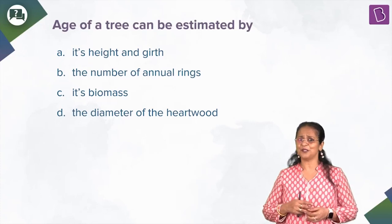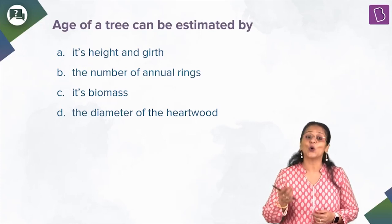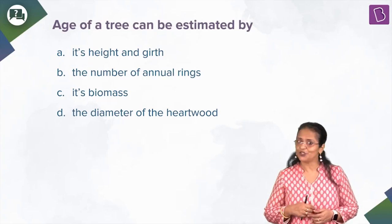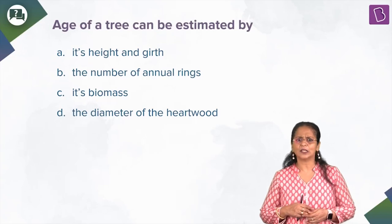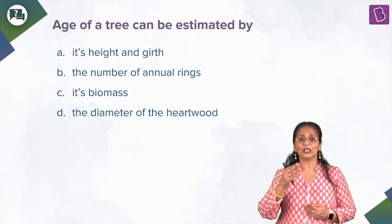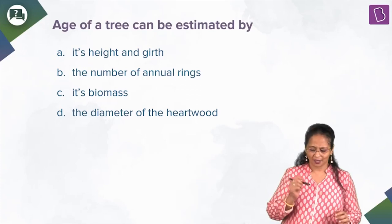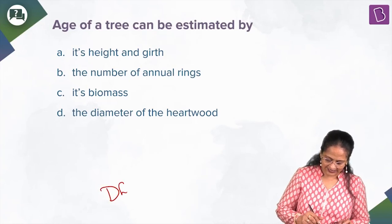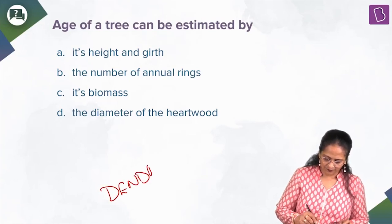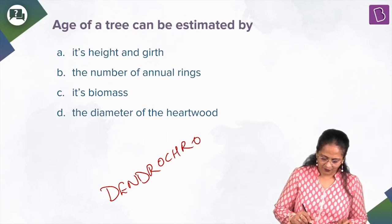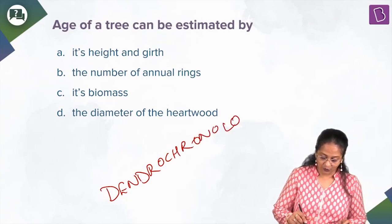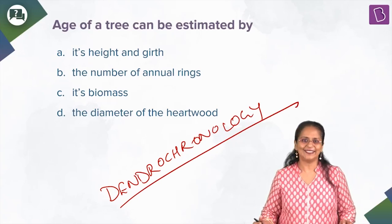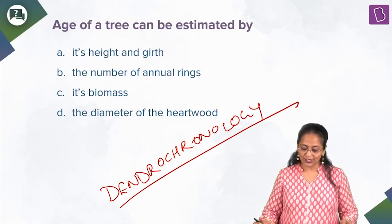Each ring corresponds to its growth, so we call them growth rings or annual rings. By counting the number of rings, we can determine the age of the plant. The scientific term for counting the number of growth rings and giving the age of the plant — I'm going to write it, try and pronounce it — it is called dendrochronology. That's a long word for a very important feature.